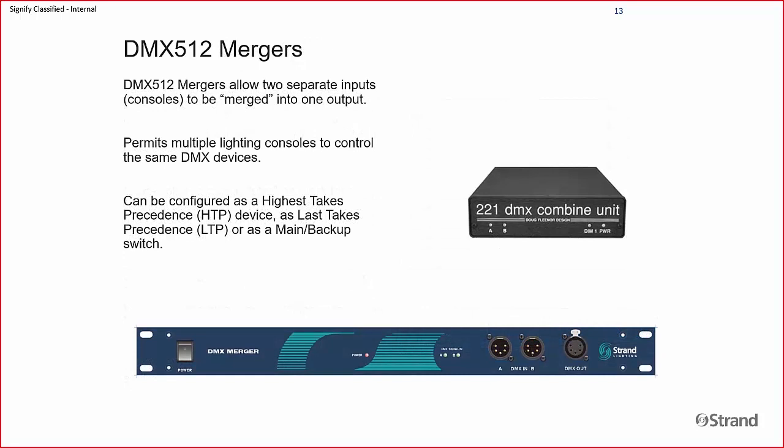There are also DMX mergers. Instead of what an optosplitter does — merging fixture data down to one control line on one universe — a DMX merger actually takes two control signals and merges them to talk to one lighting rig. At that point, they usually have the option of being configured as highest takes precedence or last takes precedence, and that determines who's in control when the two signals are merged.